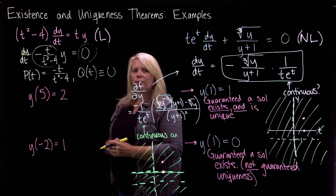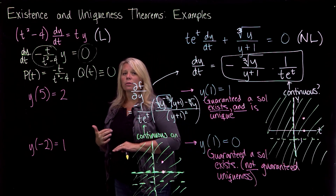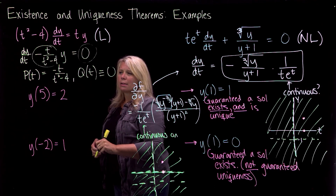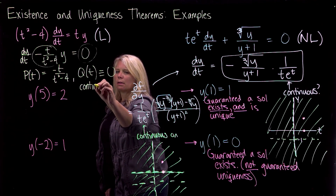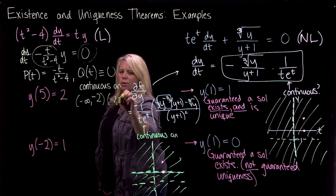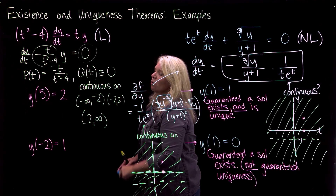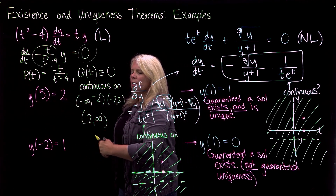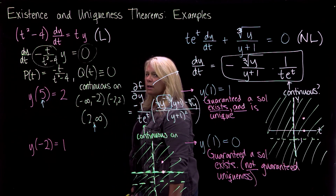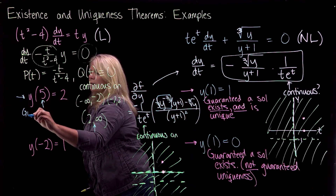You need to check where those functions are continuous. Since these are only functions of t, you just have a single variable - think about intervals or a number line. The only trouble I have with continuity is in p(t) at t equals negative 2 and t equals positive 2. So both p(t) and q(t) are continuous on the intervals negative infinity to negative 2, negative 2 to 2, and 2 to infinity. For the first initial condition, y of 5 equals 2, t equals 5 is in the interior of the interval from 2 to infinity where that function is continuous.